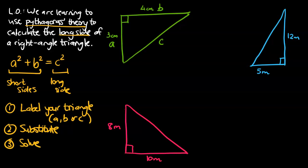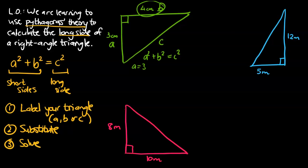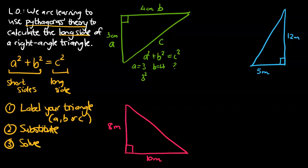Once we've labeled our triangle, we now need to substitute. So we're going to write down our equation: a squared plus b squared is equal to c squared. So what does a equal? Looking at the diagram, a equals three. b up the top, that's going to be four centimeters. And c, we don't know what c is — that's what we're trying to find out. So let's go ahead and substitute that in. a squared becomes three squared, and b squared becomes four squared, and c squared is unchanged because we don't know exactly what that is.